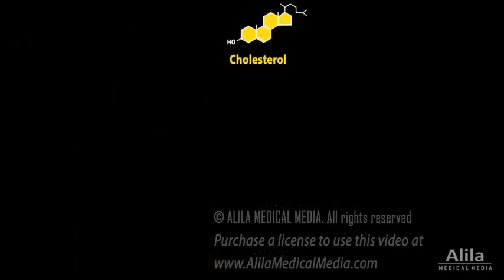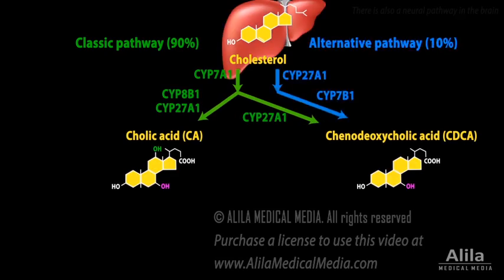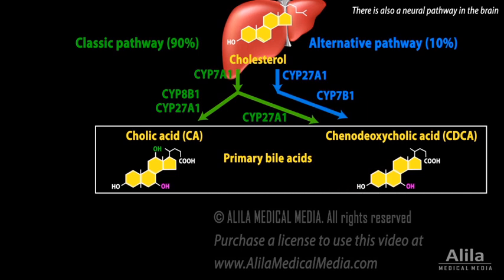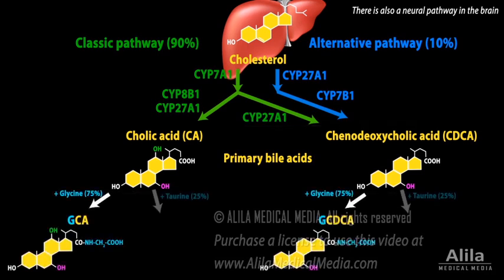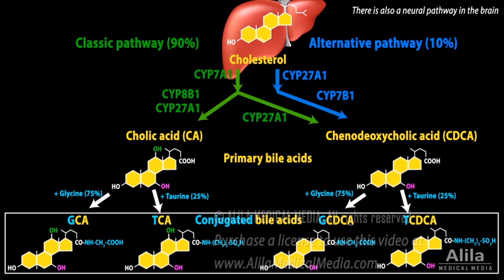Bile acids are synthesized from cholesterol via several pathways. The synthesis occurs mainly in the liver. The primary bile acids produced by the liver include cholic acid and chenodeoxycholic acid. These primary bile acids are then combined with the amino acids glycine or taurine, forming conjugated bile acids, which are secreted into bile ducts.